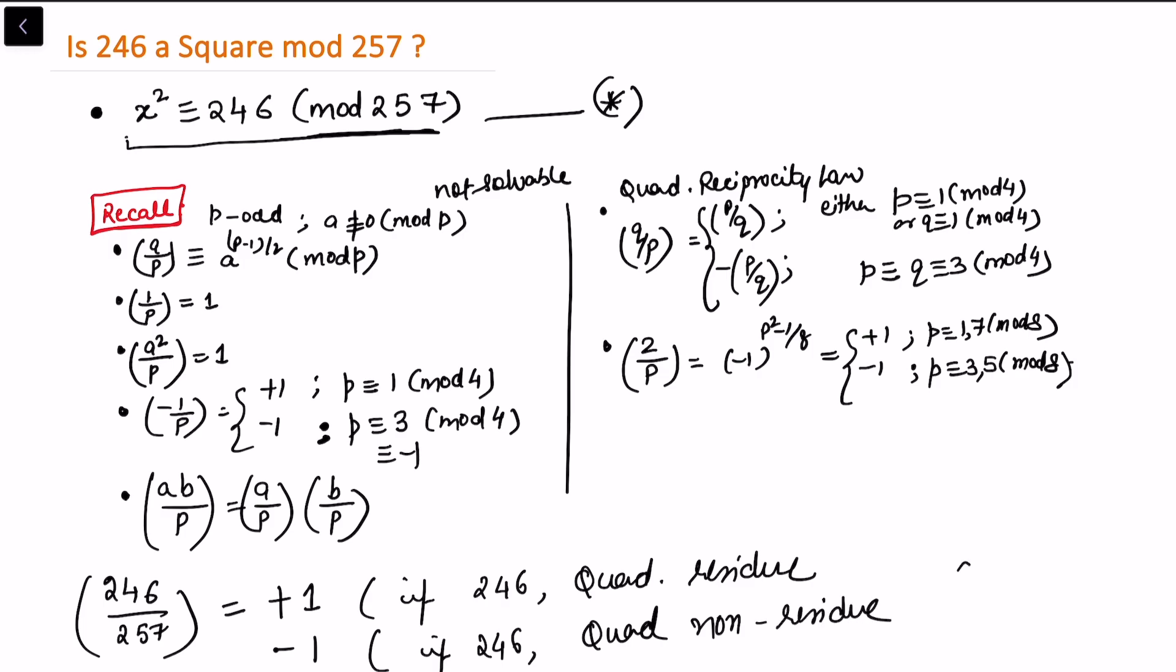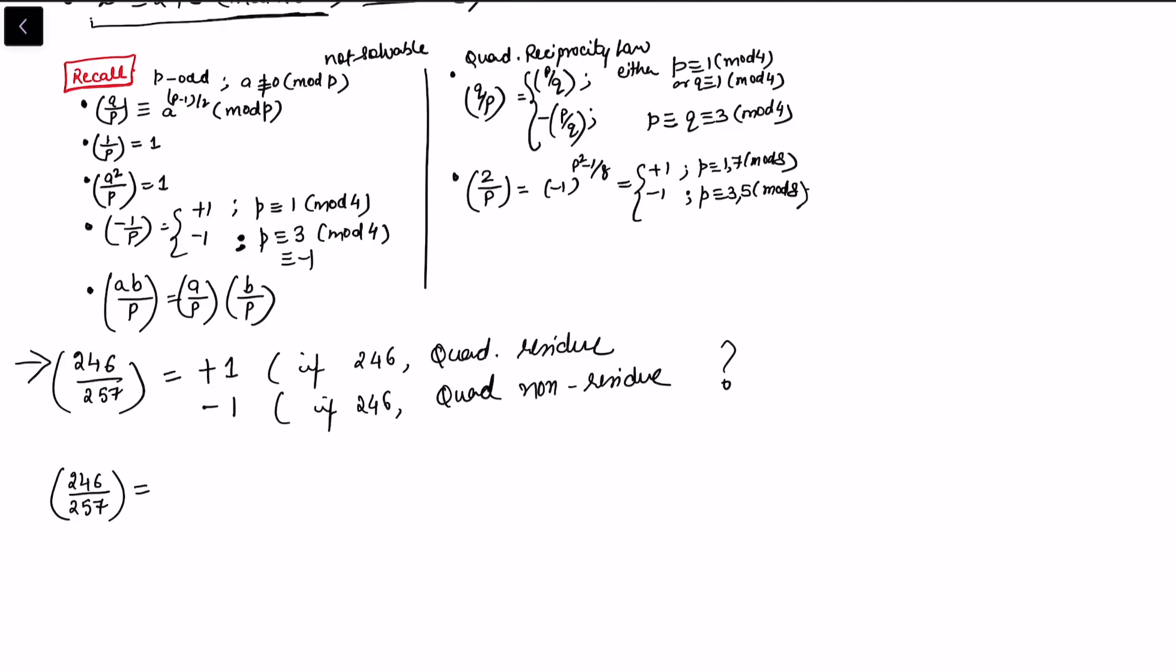Now let's reduce 246/257. We can write 246 as (2/257) × (3/257) × (41/257). So I have done the prime factorization for the numerator term.